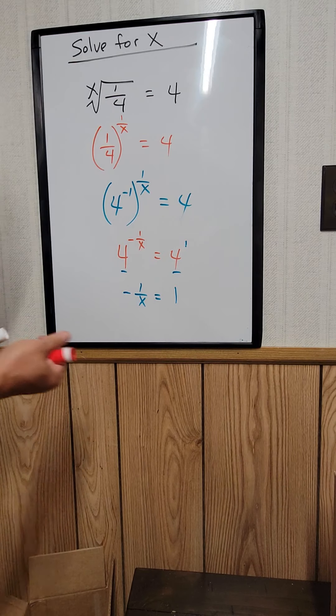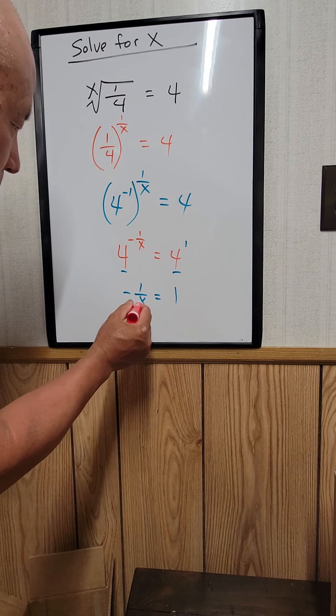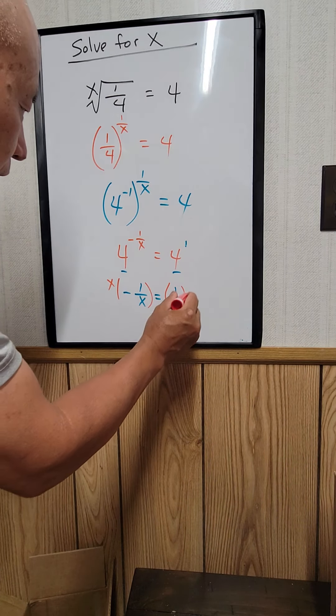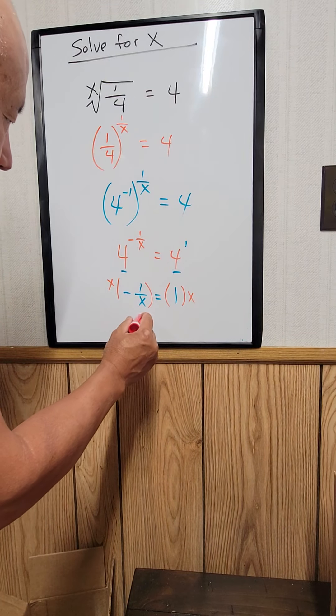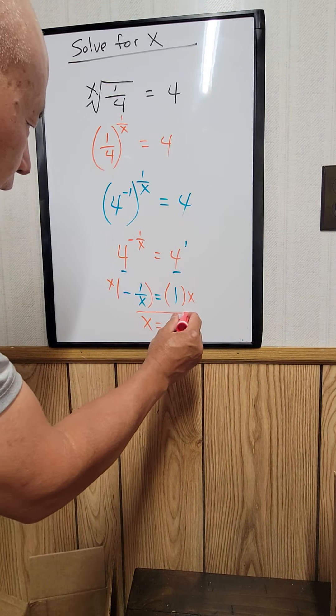And if you multiply both sides by x, what you have is x equals negative 1. That's the answer.